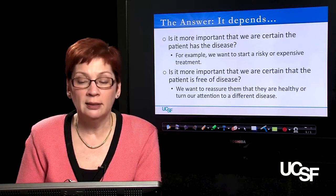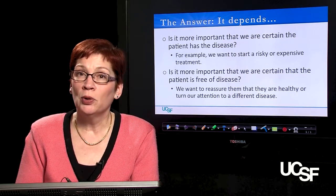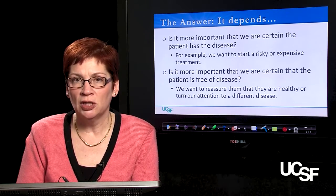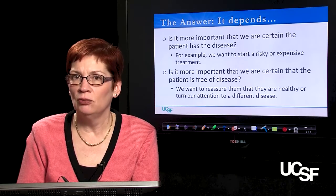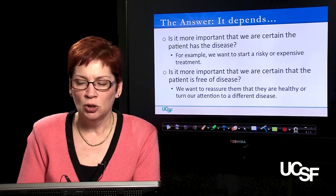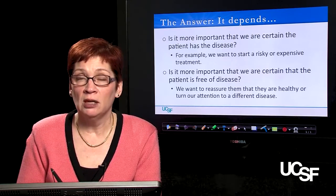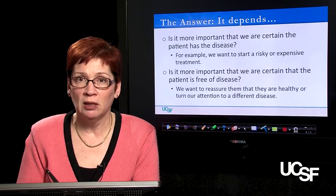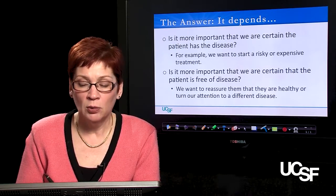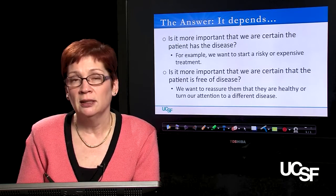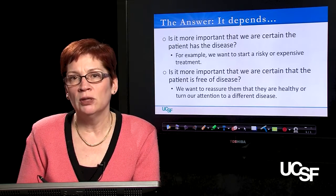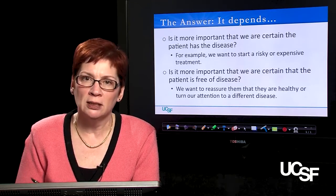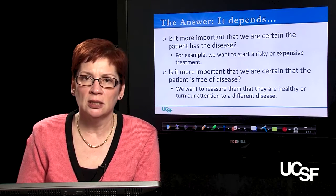It depends on whether it's more important that we are certain the patient has the disease. We want to make absolutely certain our patient has a disease if we plan to start a risky or expensive treatment. For instance, if the treatment is chemotherapy for leukemia, we better be as close to 100% as possible that the person actually has leukemia before we start. Or is it more important that we're certain the person is free of disease — to reassure them, or to stop considering a distracting disease and turn our attention to a different diagnosis.